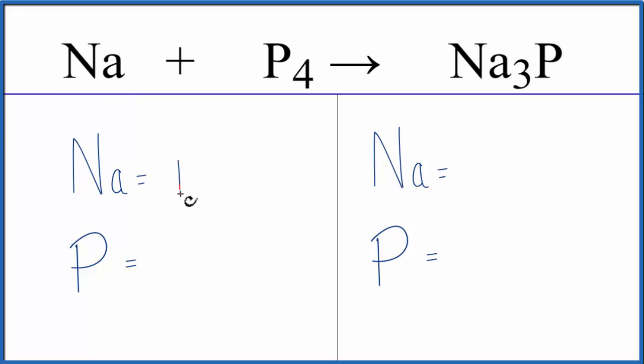We have one sodium atom and then four phosphorus atoms. On the product side of the equation, we have three sodium atoms and one phosphorus atom.